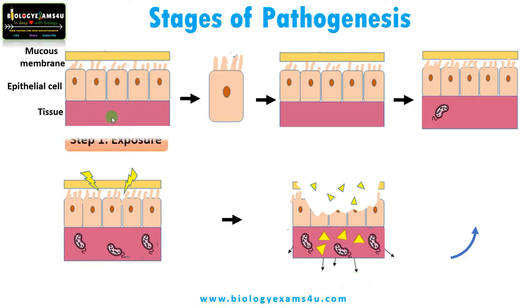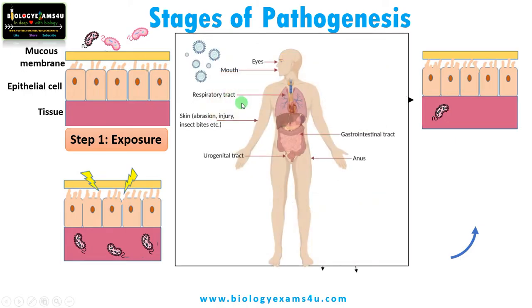Step one is the exposure to the pathogen. Contact with a potential pathogen is called exposure. There are different entry routes like all the openings — eyes, mouth, respiratory tract, wounds or abrasions in skin, urogenital tract, gastrointestinal tract — all are openings through which a pathogen can enter into the body system.